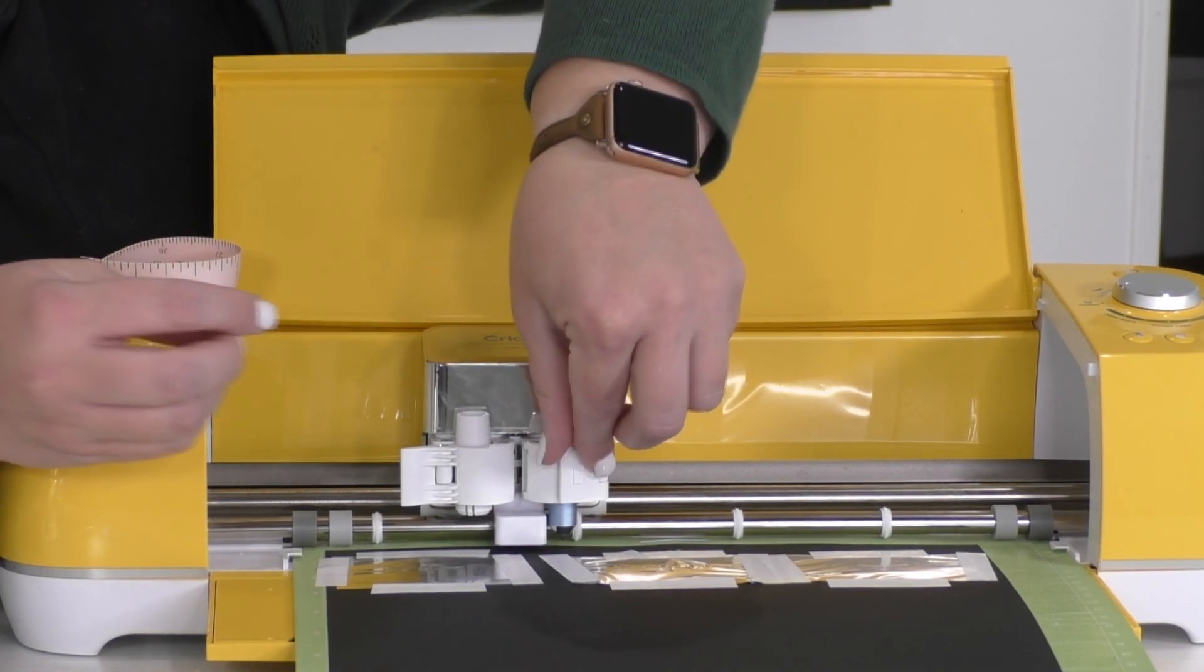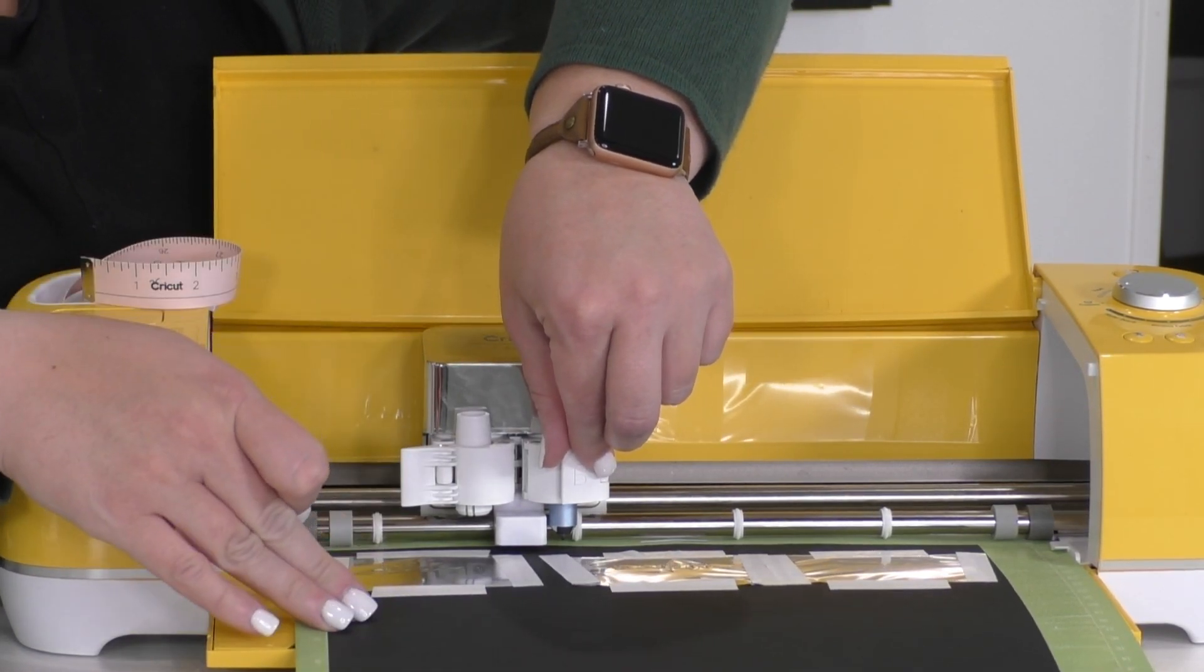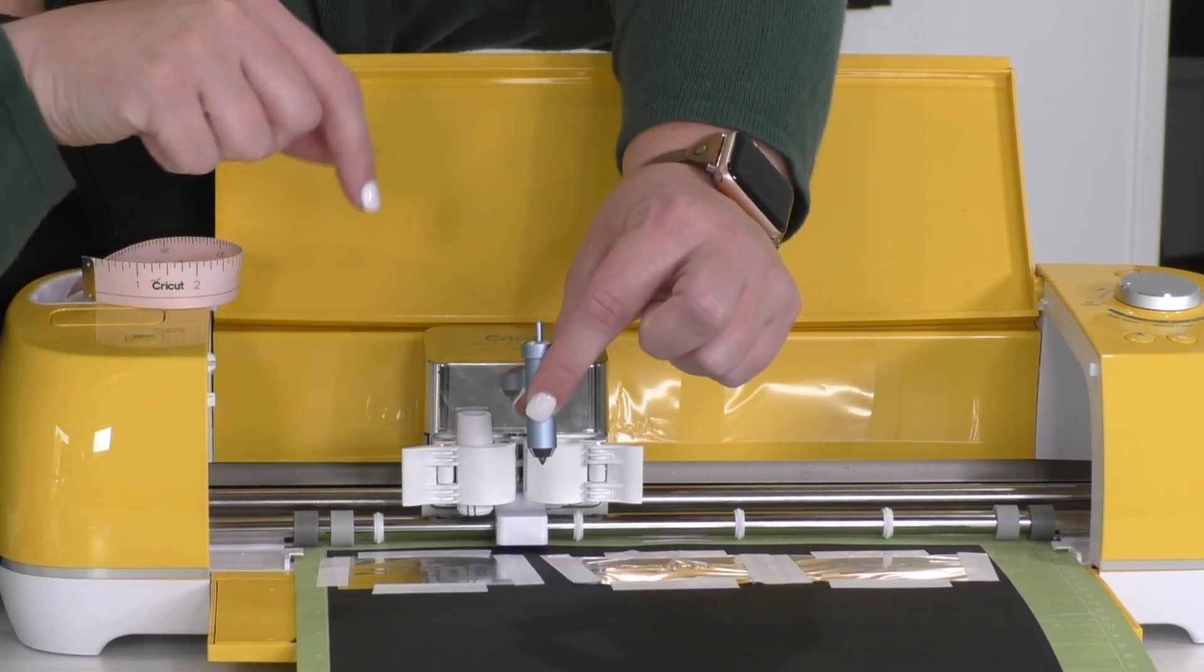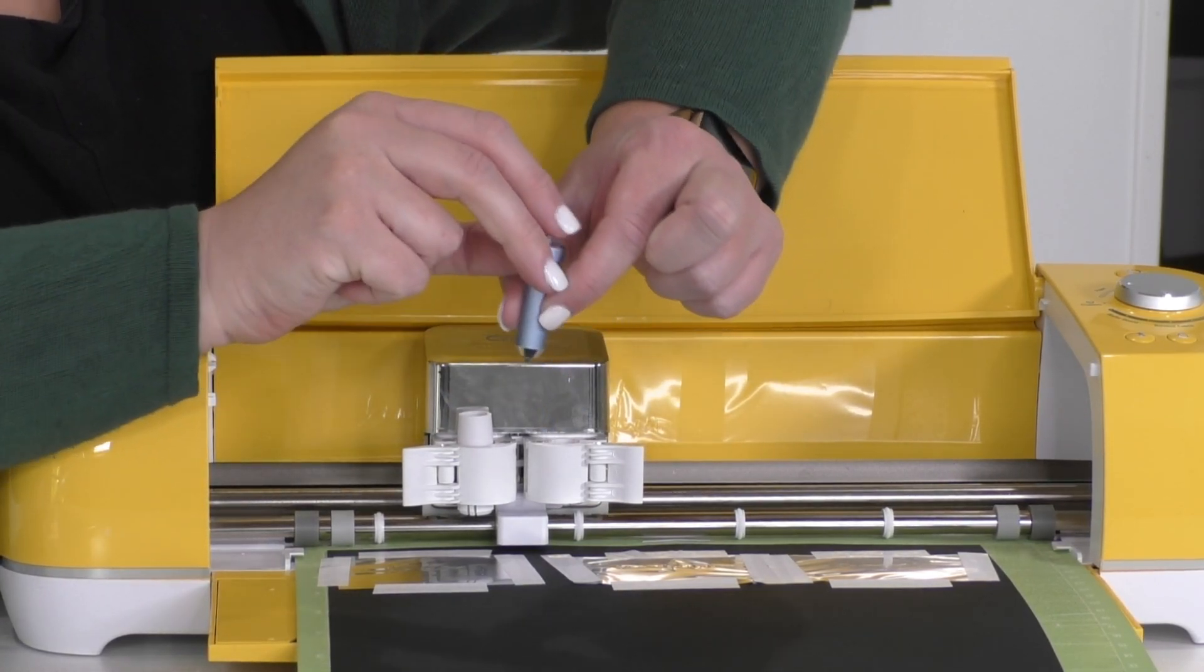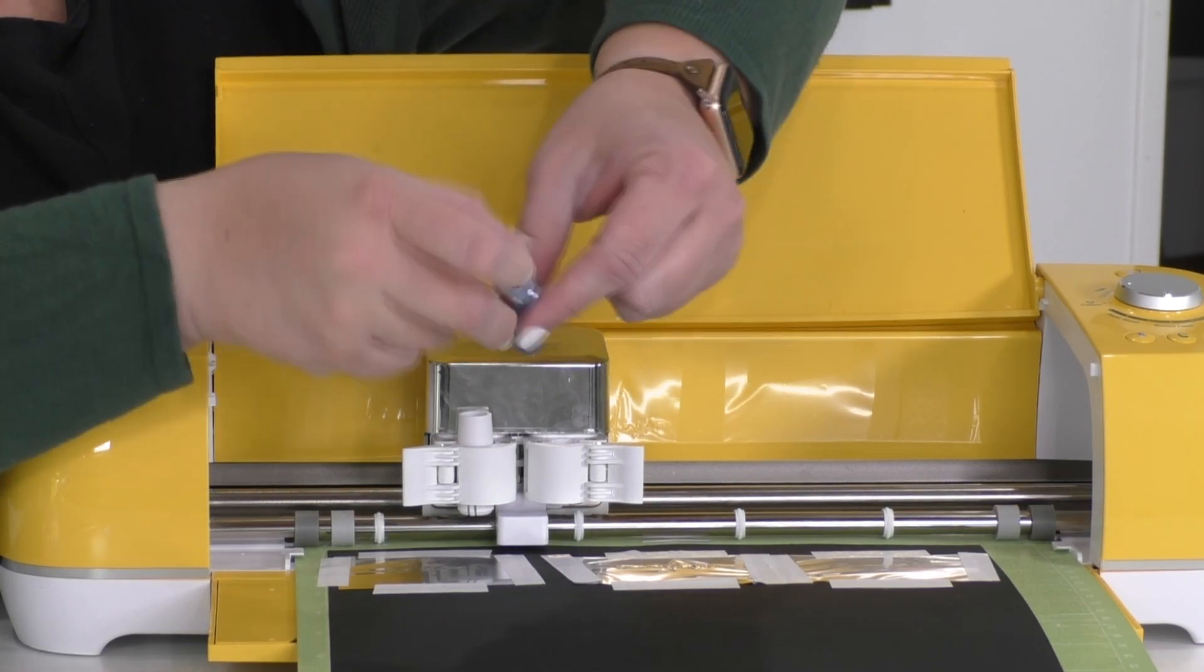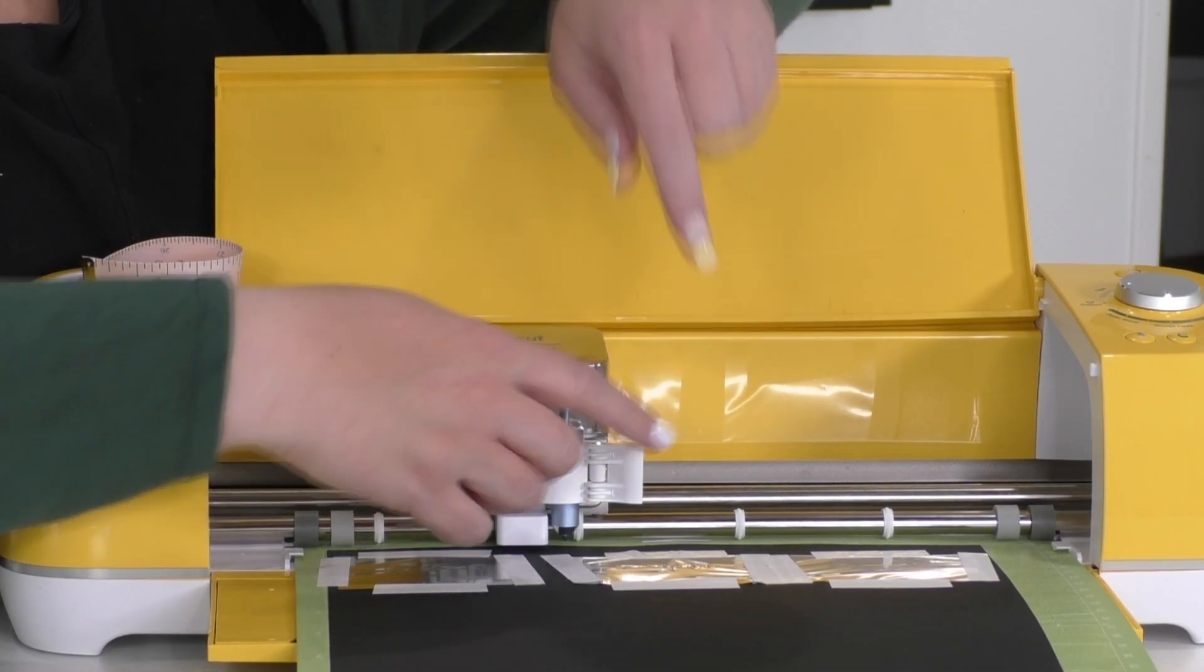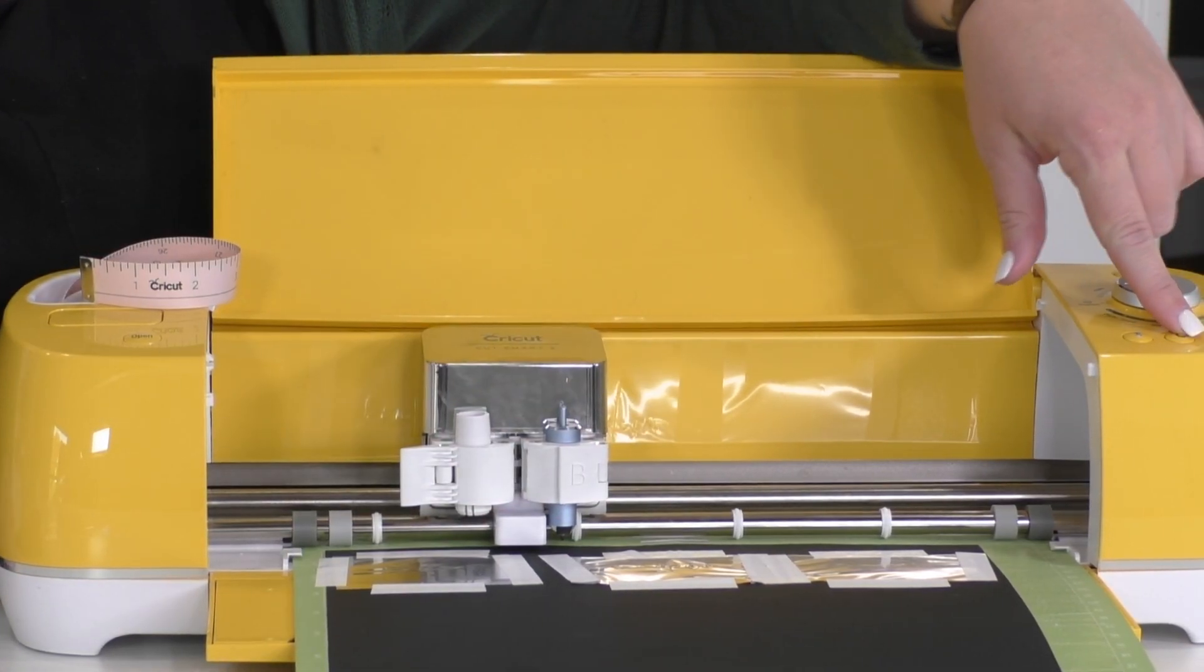Okay. Now we are going to, again, without unloading the mat, we're going to remove the foil transfer tool, push this little button down to grab that tip out. And then we will go ahead and install the bold tip, put that in the clamp and press the flashing Cricut button again.